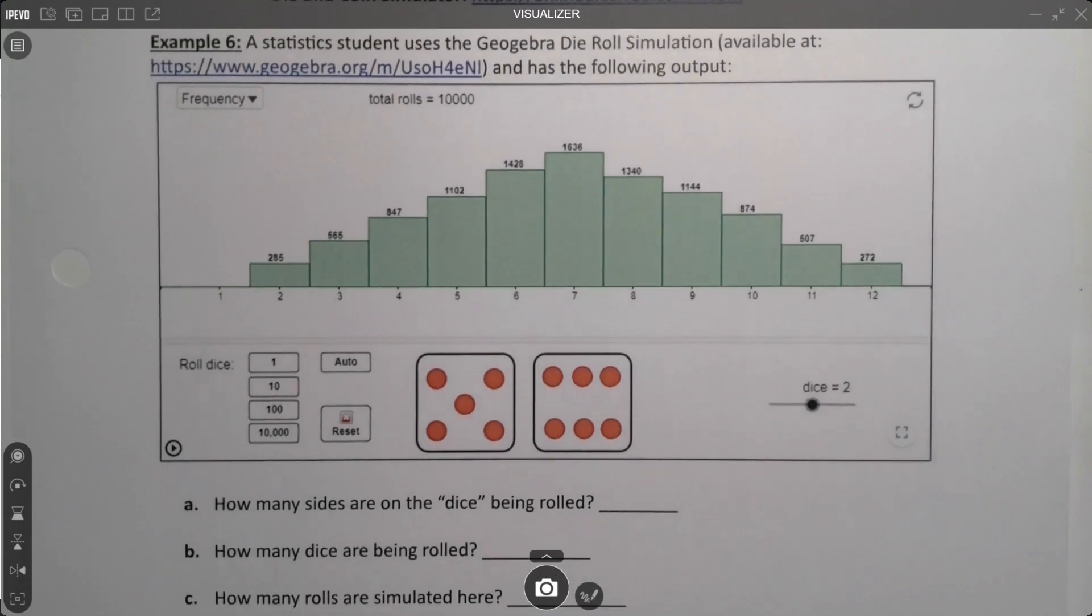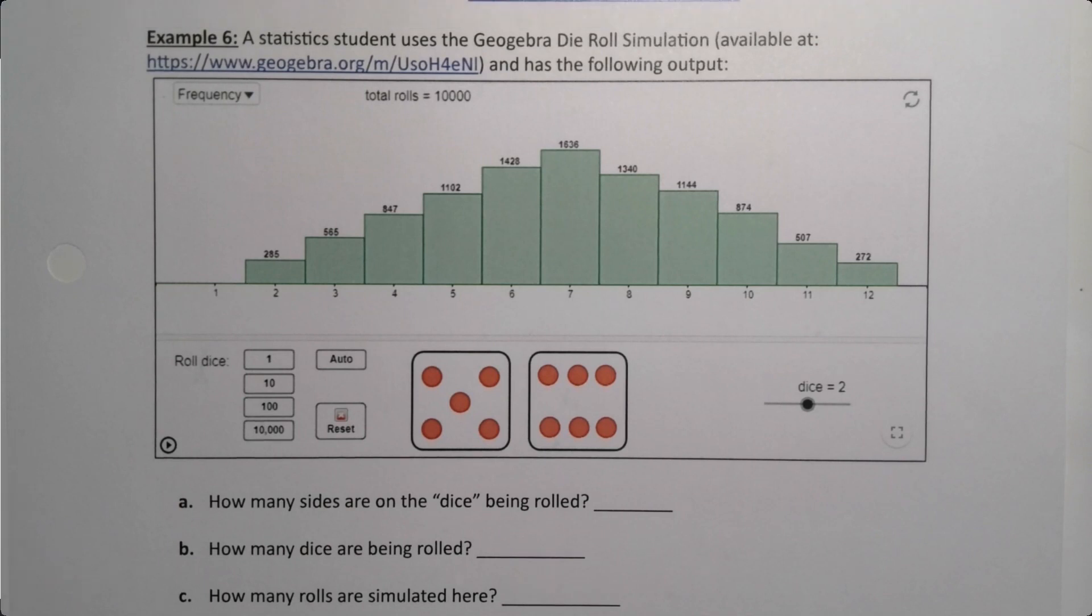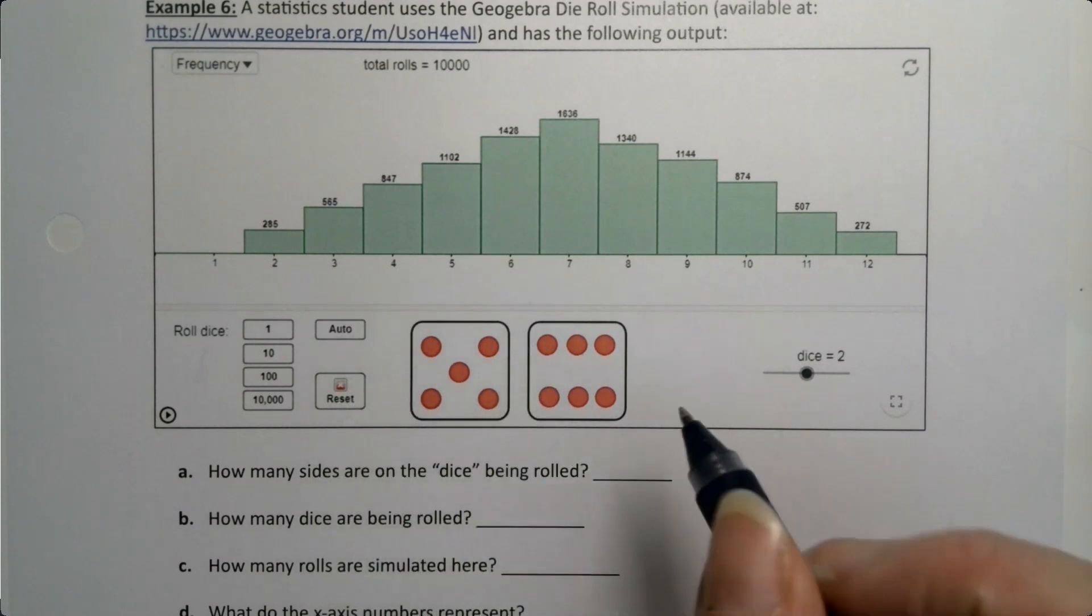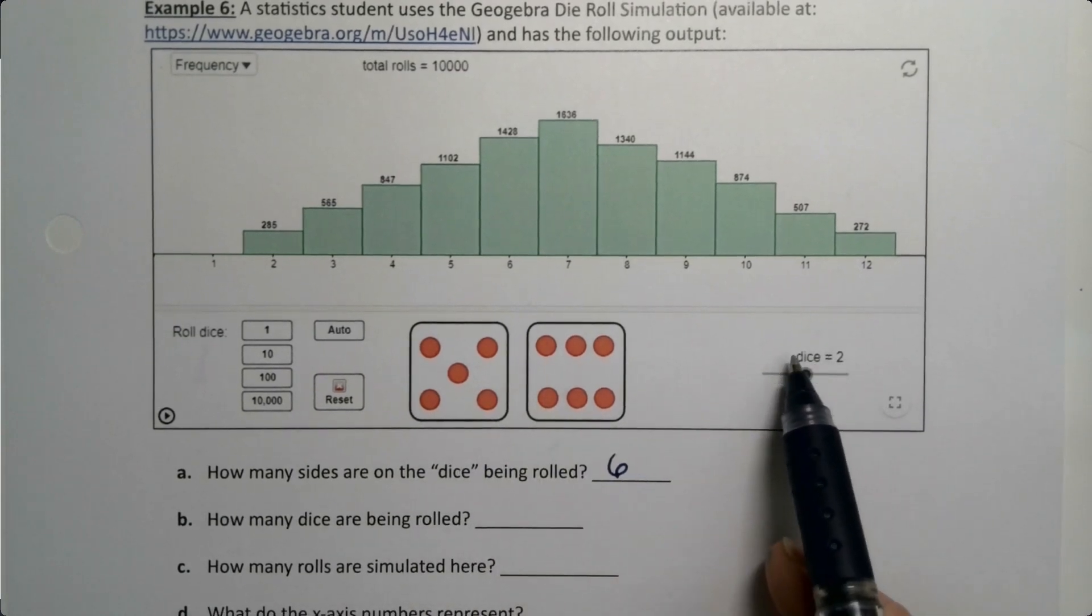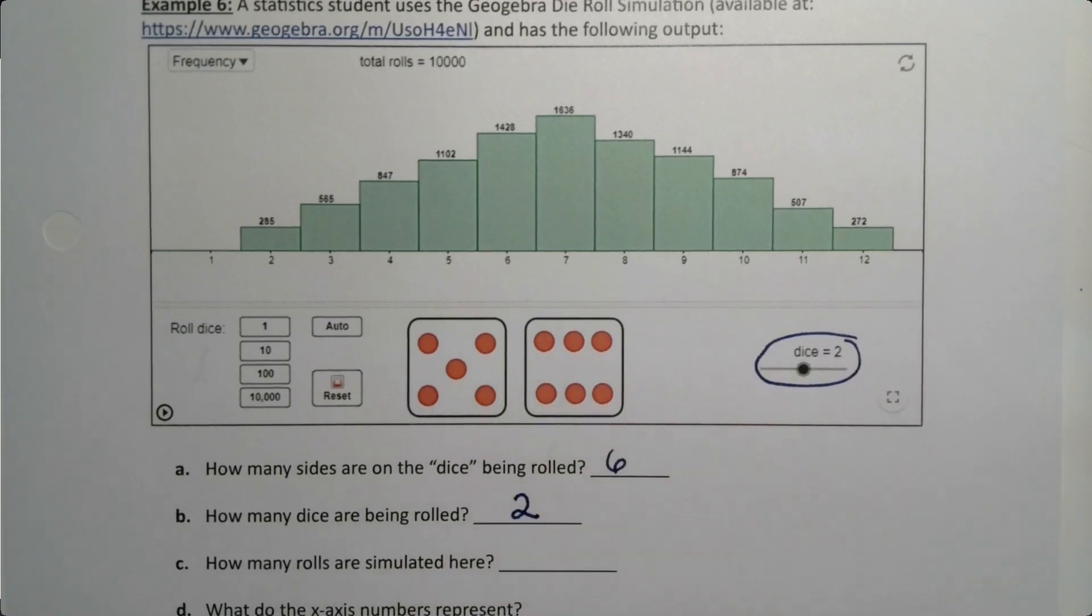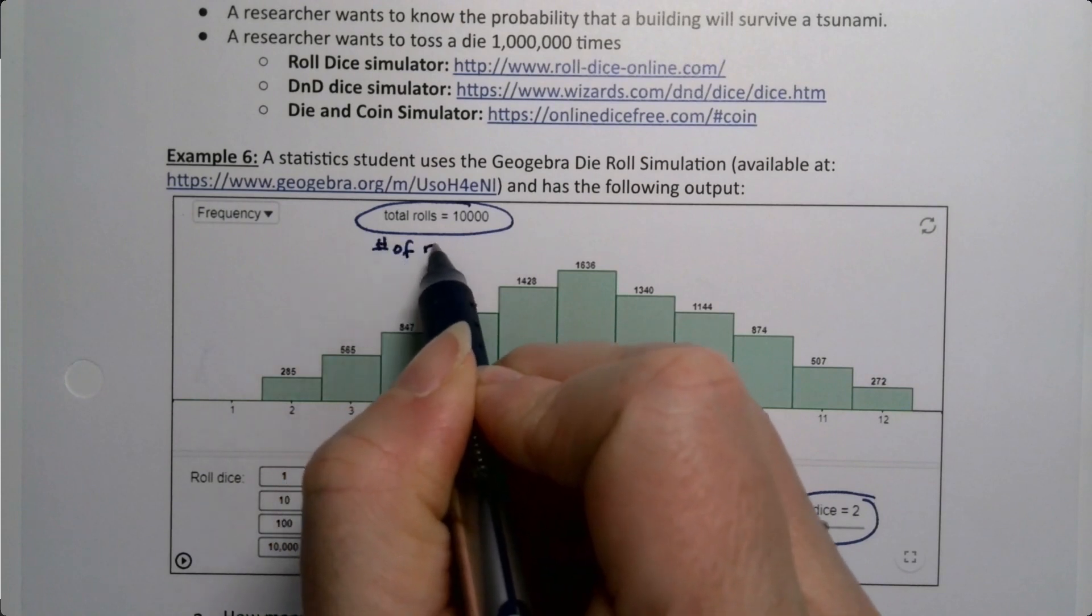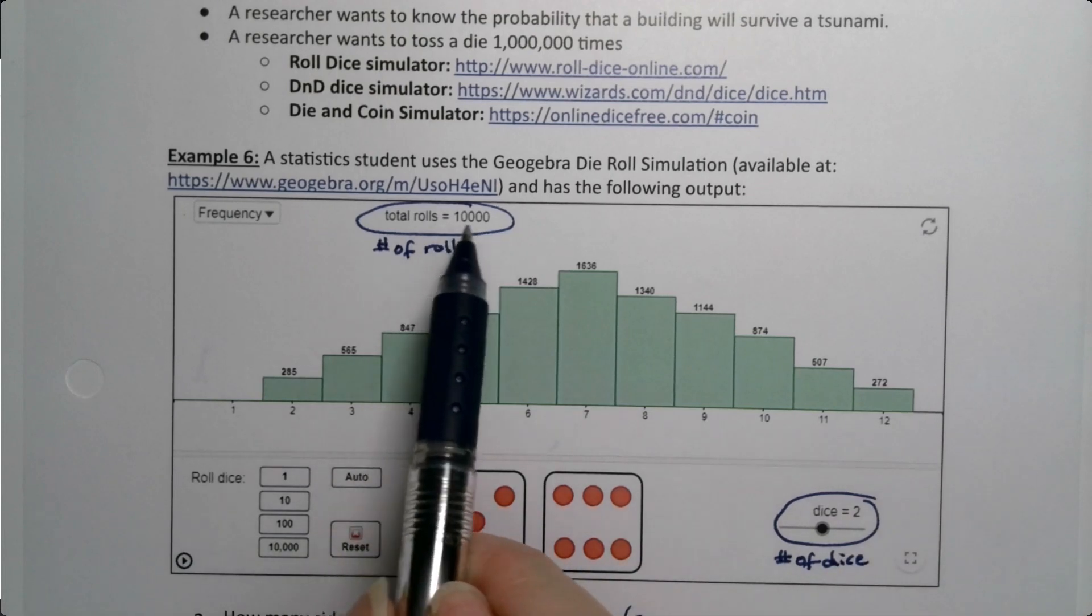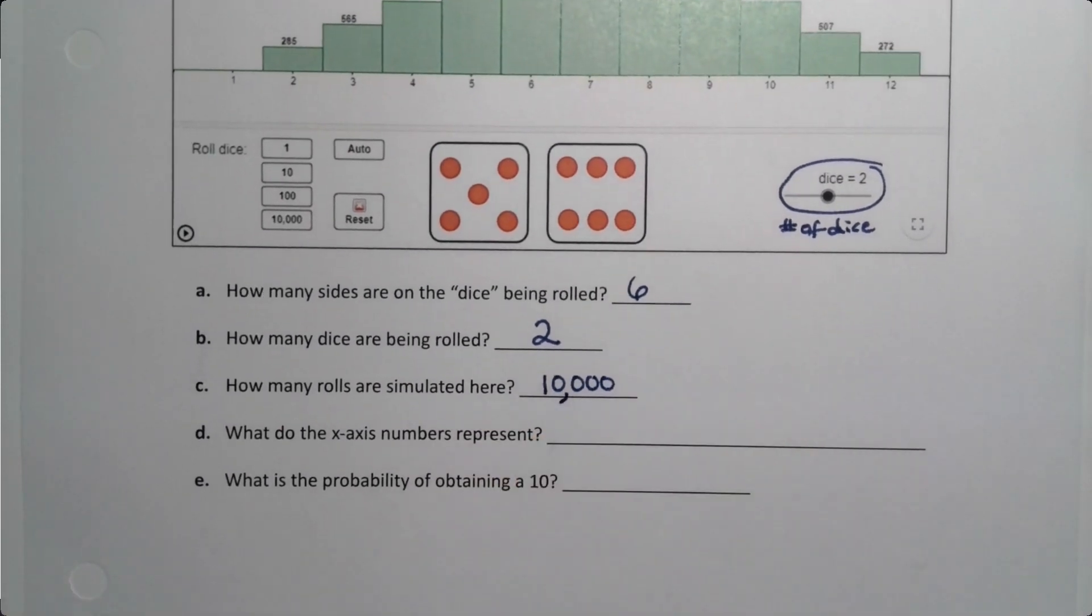However, it's not exactly the same. So the statistics student uses the GeoGebra die roll simulation available at that link and has the following output. How many sides are on these dice? Well, you can tell these must be six sided dice. So six. How many dice are being rolled? Well, there's two. You can see it right here because it says two. But also there's two of them. How many rolls are simulated? Well, that's up at the top. That's the number of rolls up here. This is the number of dice down here. So I can see that there were 10,000 rolls. If you want, you can put a comma in there. It's just a placeholder.